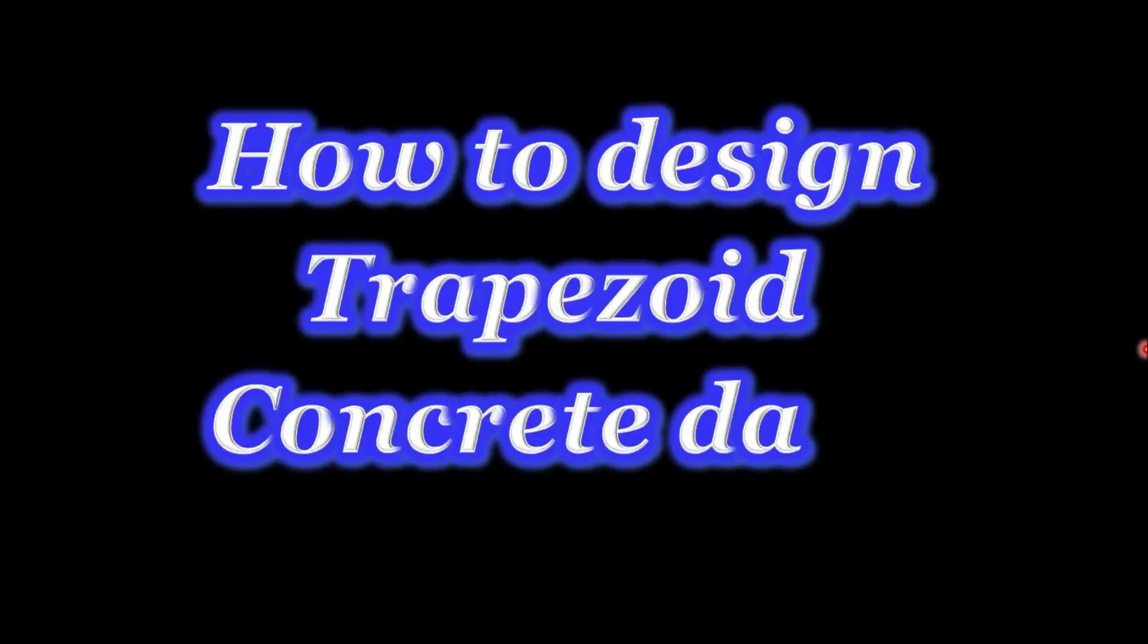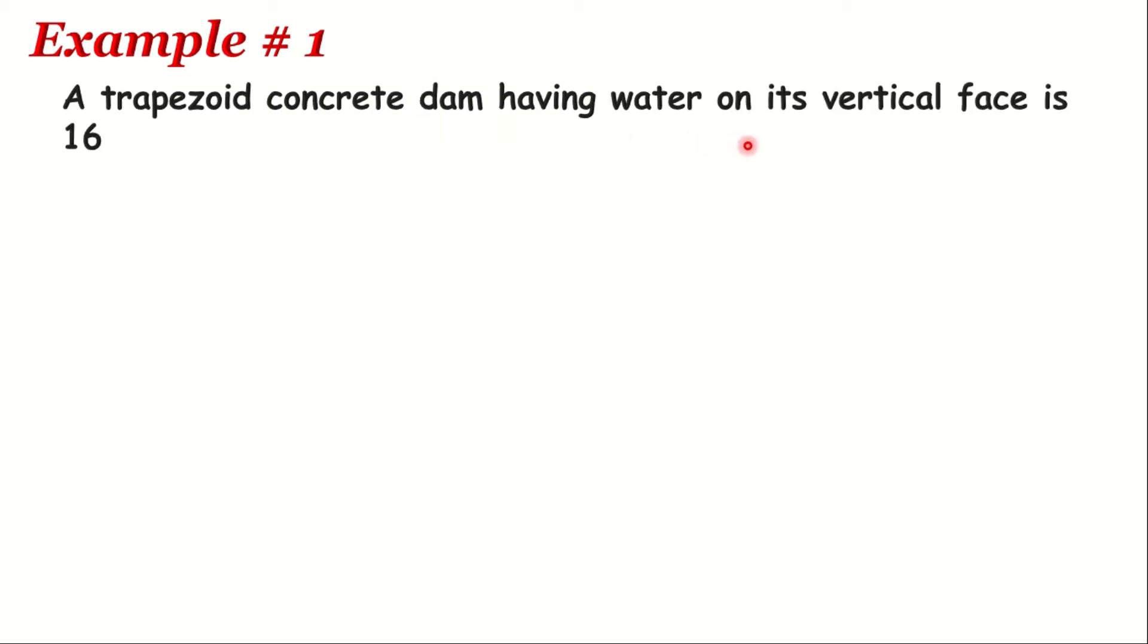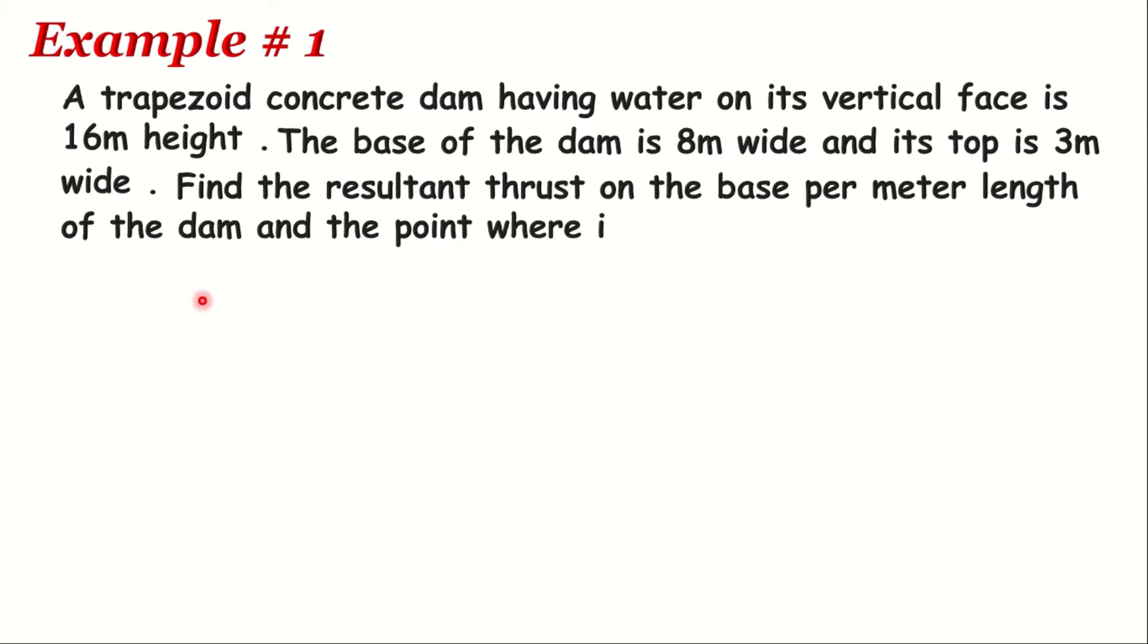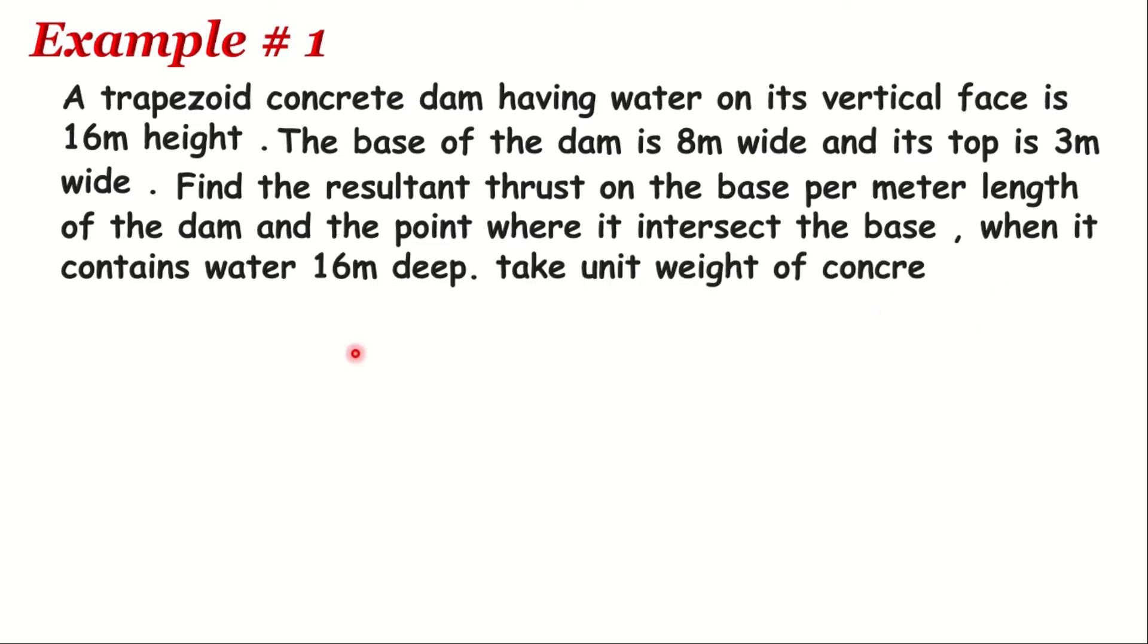How to design a trapezoidal concrete dam. Example number one: A trapezoidal concrete dam having water on its vertical face is 16m height. The base of the dam is 8m wide and its top is 3m wide. Find the resultant thrust on the base per meter length of the dam and the point where it intersects the base when it contains water 16m deep. Take unit weight of concrete 23 kN/m³.